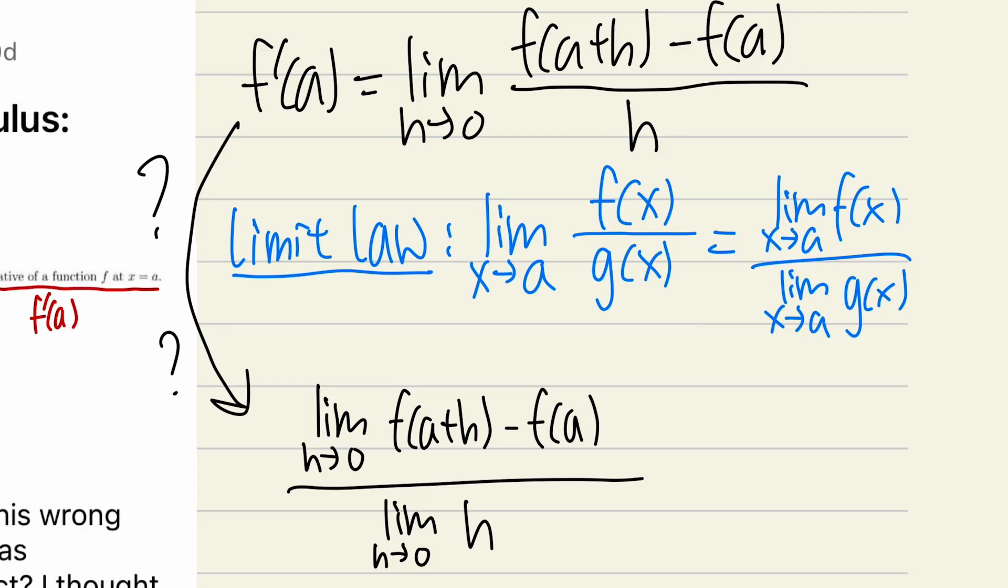Well, it's not a contradiction because you really have to pay attention to the details. In order for us to use this limit law, this is a detail, we have to make sure that this is only true if the denominator here is not equal to 0. The limit as x approaching a of g of x, this denominator cannot be equal to 0.